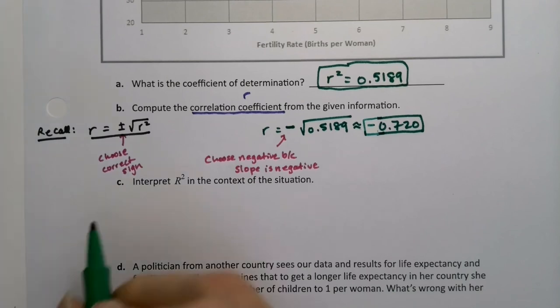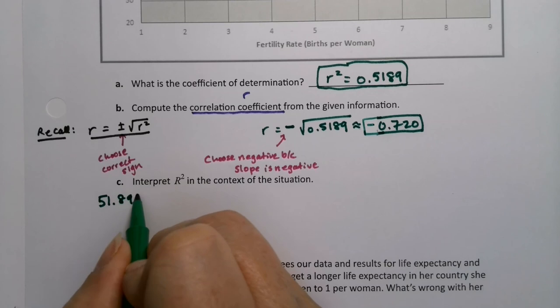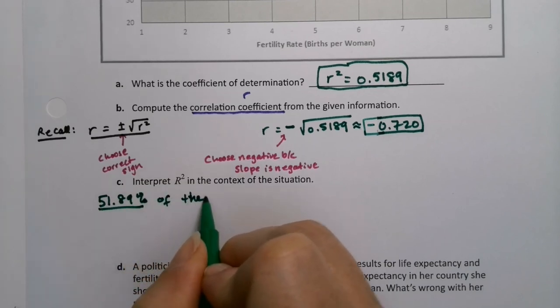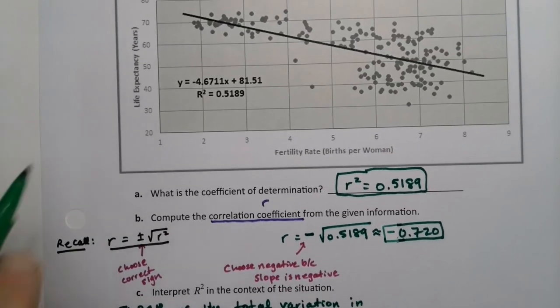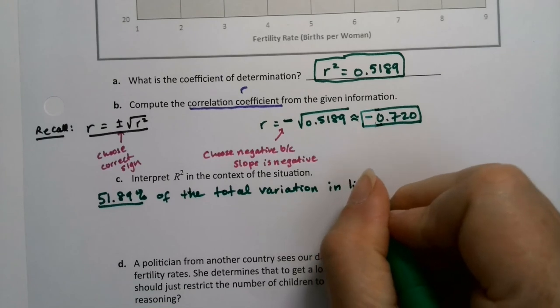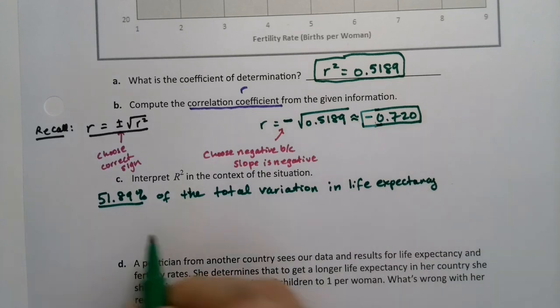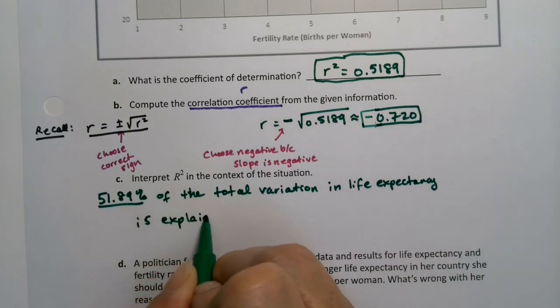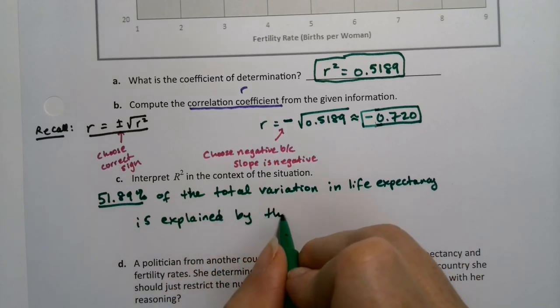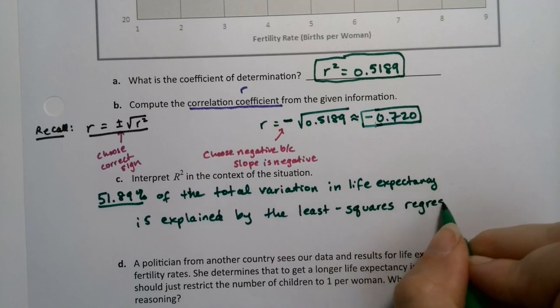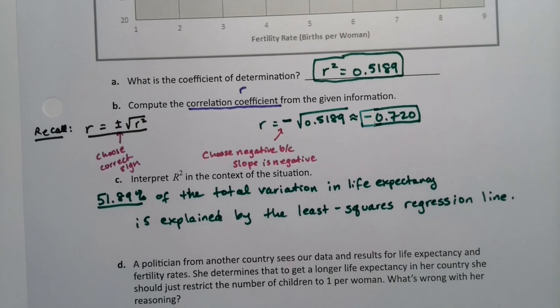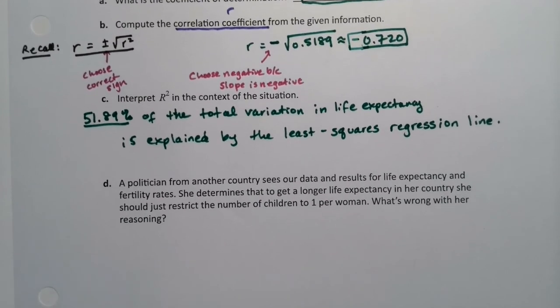Now interpreting the R-squared, that's that script that we follow. We would say 51.89% of the total variation in y, and y is the response variable so it's life expectancy, in life expectancy is explained by the least squares regression line. I guess the only variation you can have on that script is playing around a little bit with what you write there. So you write like the linear regression line or the least squares regression line, something like that. We all know what you mean. Or the linear regression model, I should say.